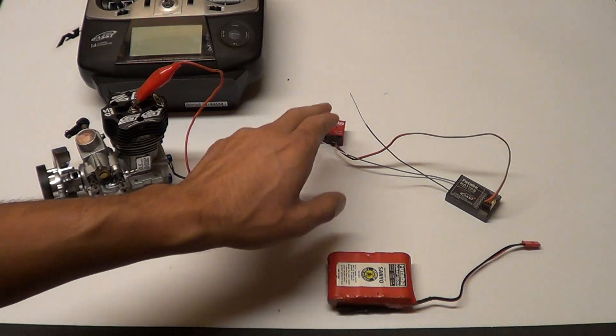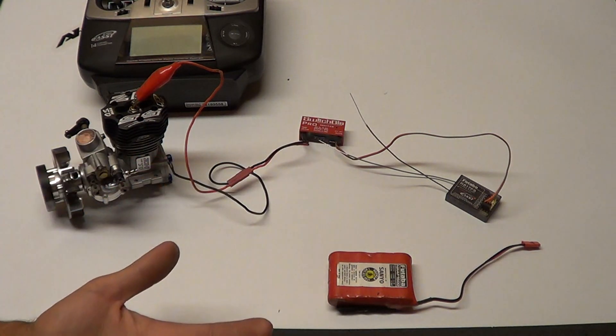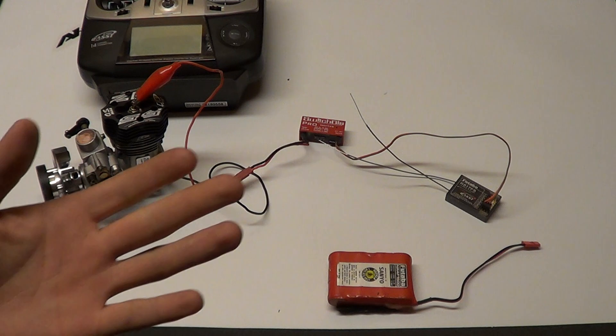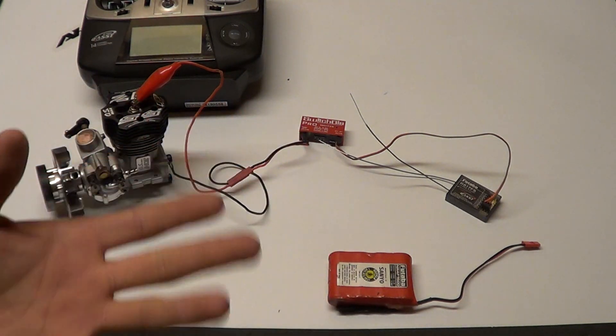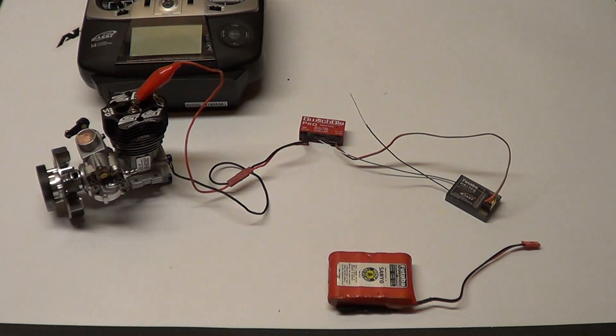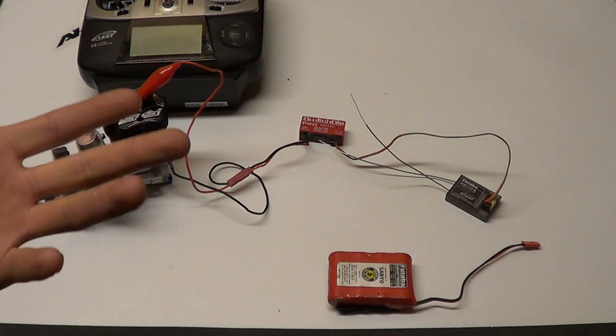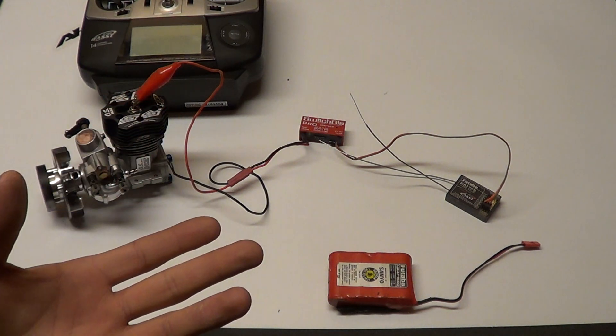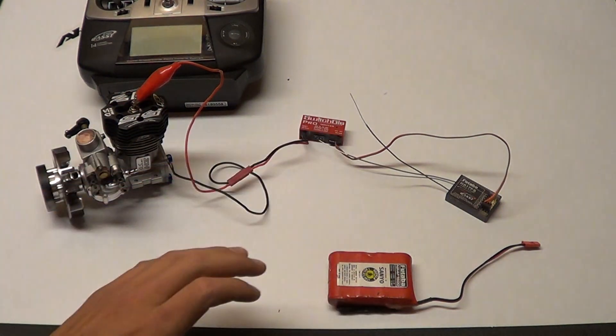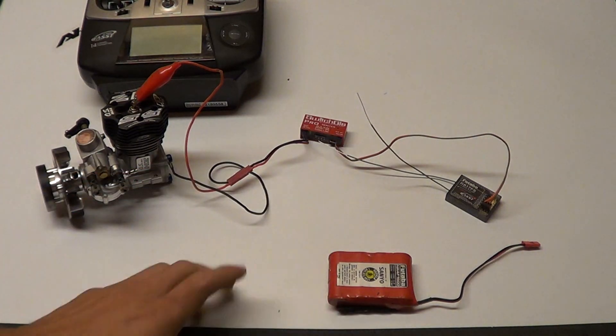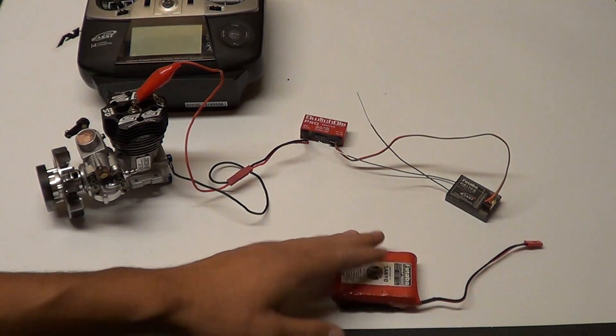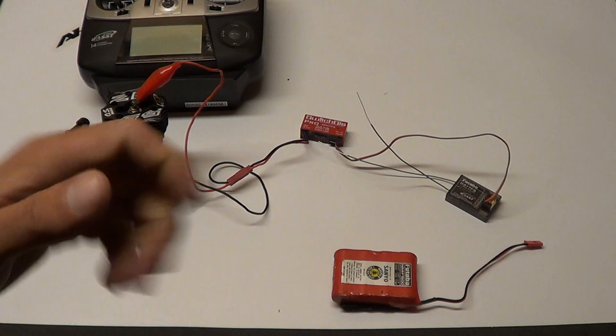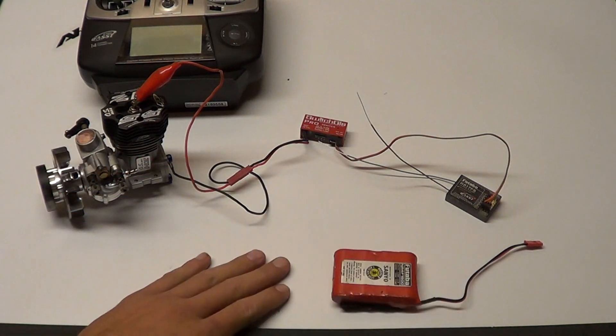The switchglow can use anywhere from 4 to 9 volts. If you're familiar with high voltage servos and 7.4 LiPo batteries, this can handle that. LiFe battery, standard old school NiCad - it handles everything, covers every base.